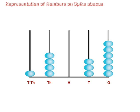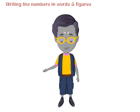So the number is 14036, or fourteen thousand thirty-six. Writing the numbers in words and figures.